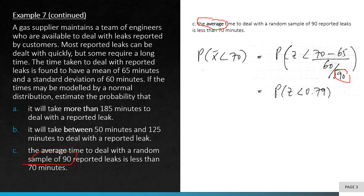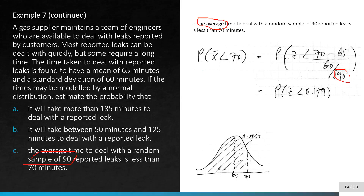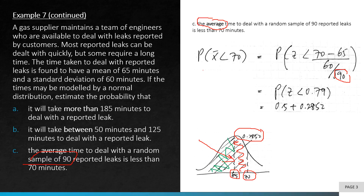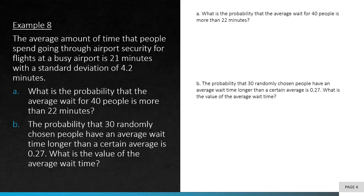Solving gives z < 0.79. Look up the corresponding probability in the normal table: 0.2852. Sketch the distribution — mean is 65, we want less than 70. The table gives us the area from the mean to 70 (0.2852), but we also need the left half. So: 0.2852 + 0.5 = 0.7852.